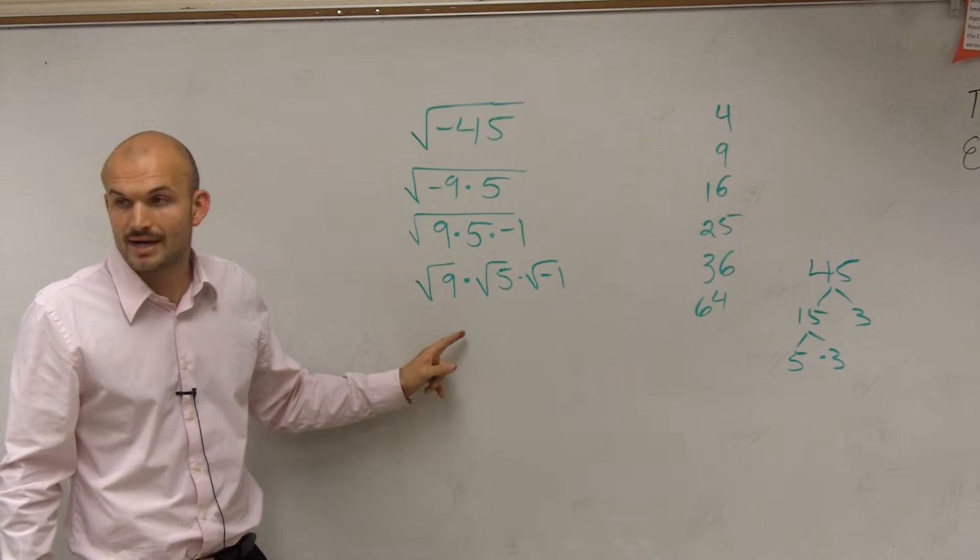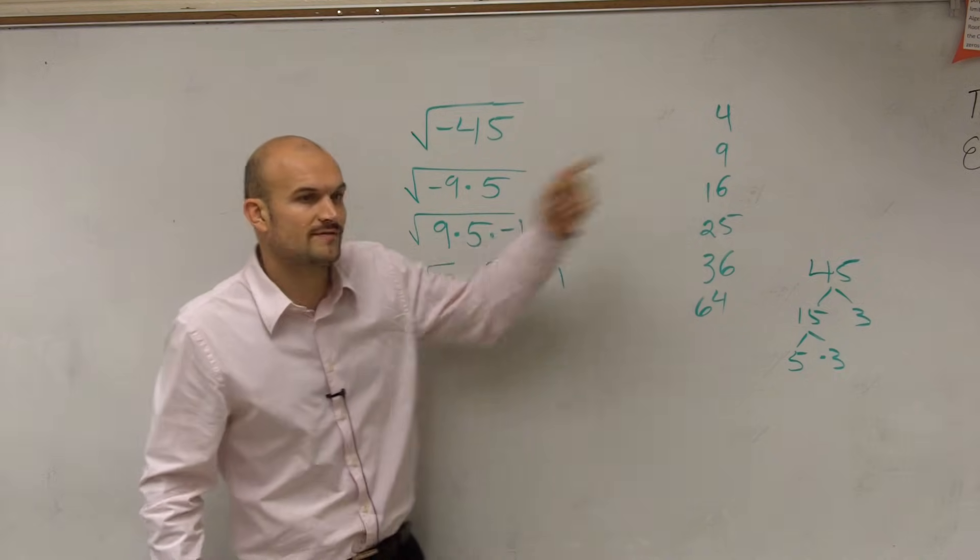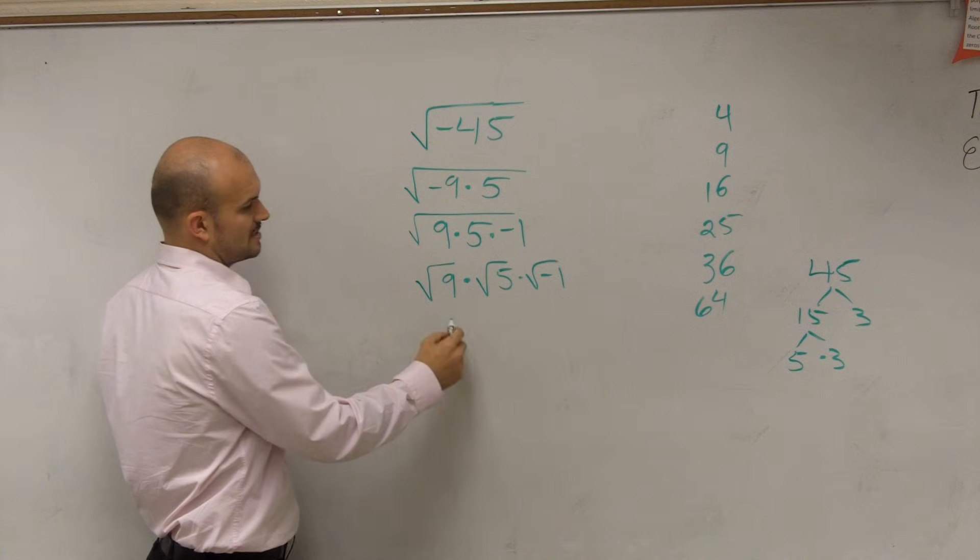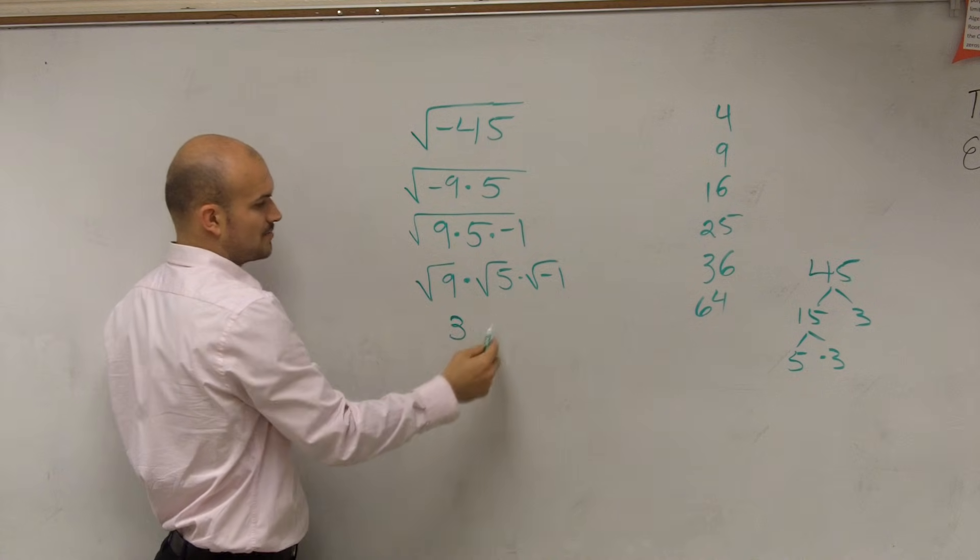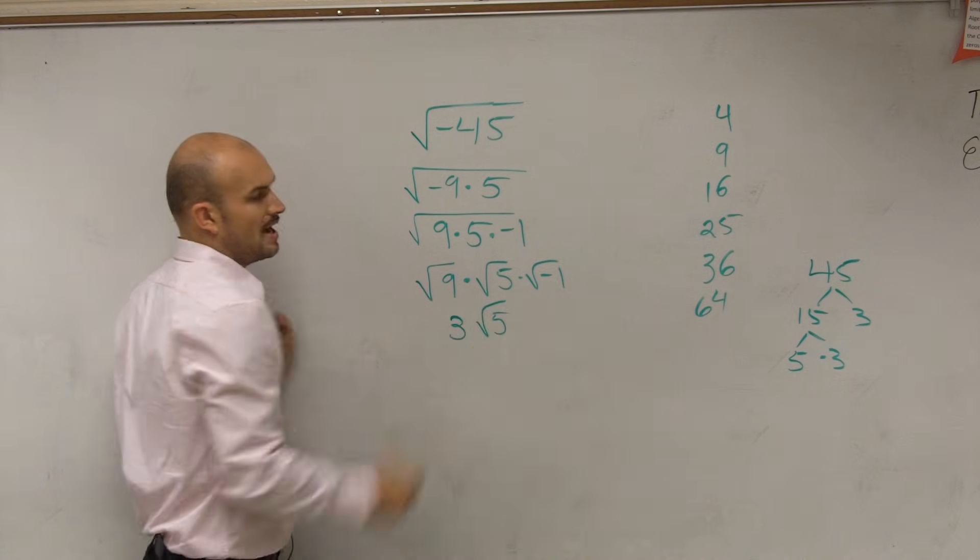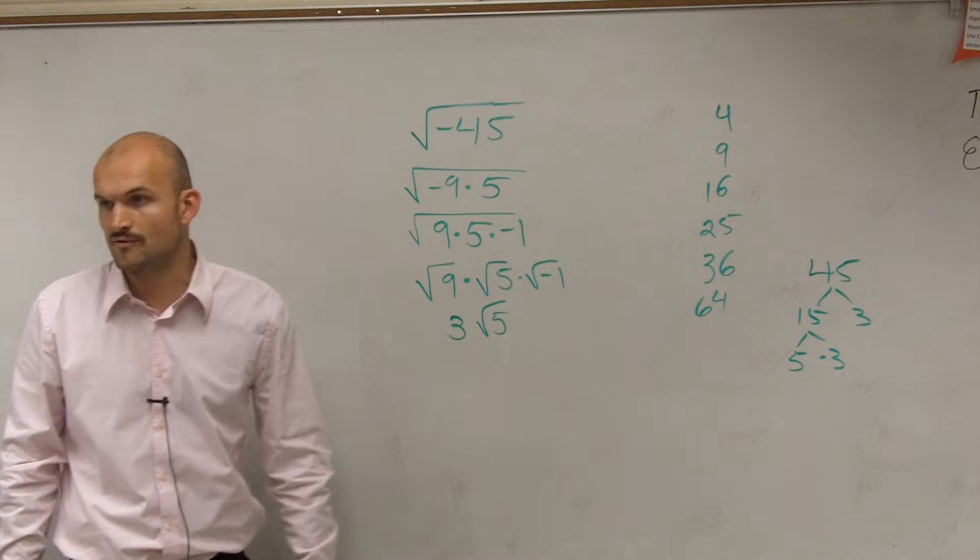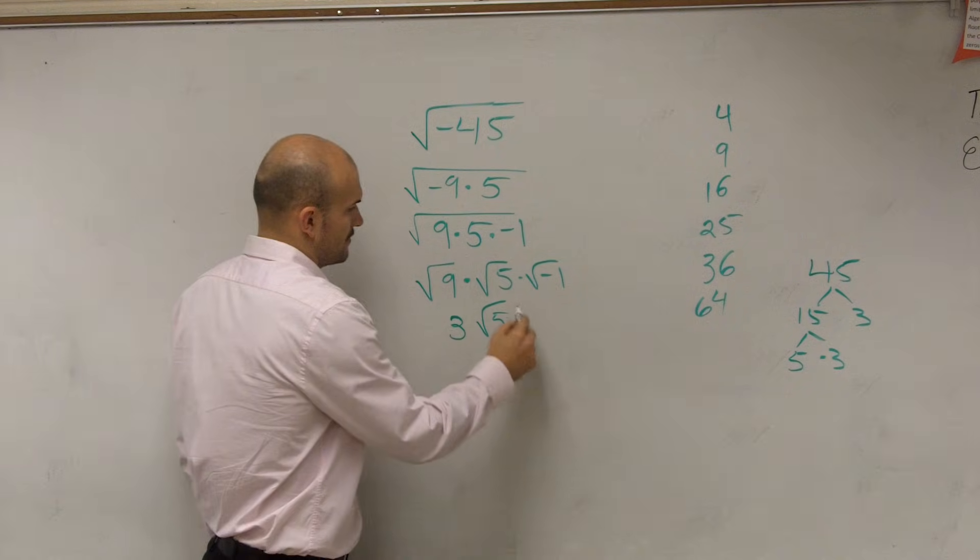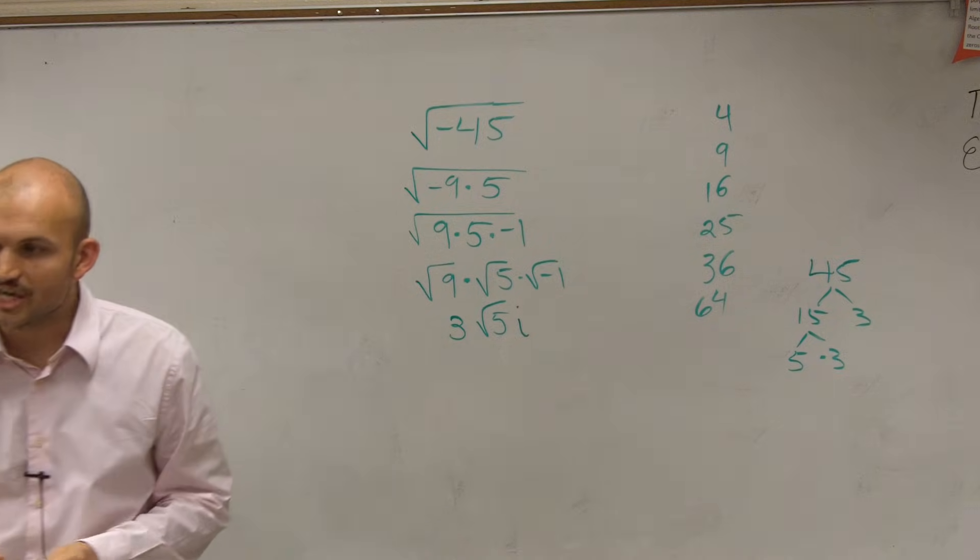Now, do I know the square root of 9? Yes. That's why it was so important to factor this. Because the square root of 9 is 3. The square root of 5 is not a square number, so it remains under there. And our definition of imaginary numbers: the square root of negative 1 is i. Done.